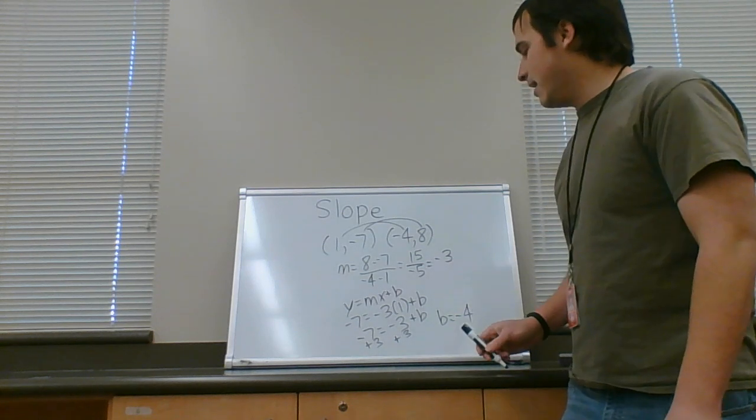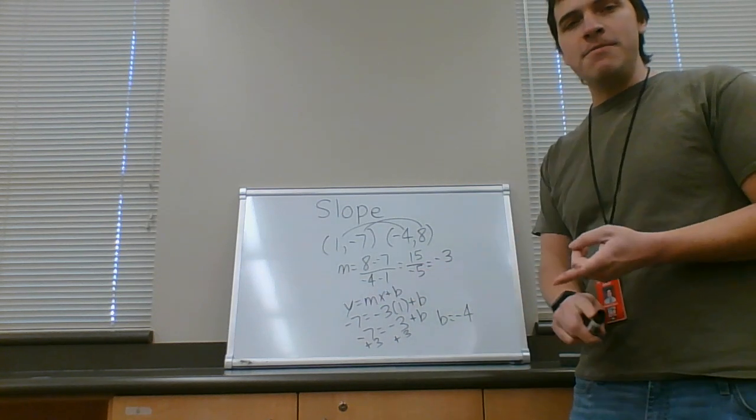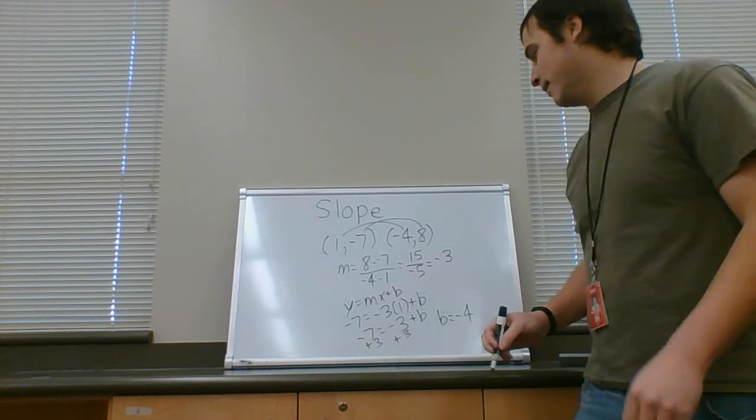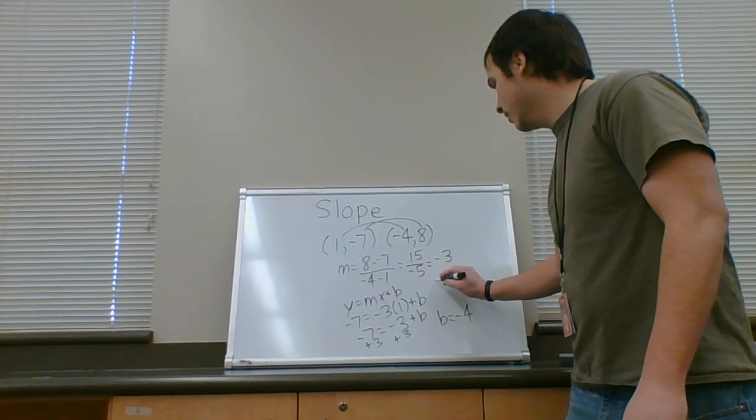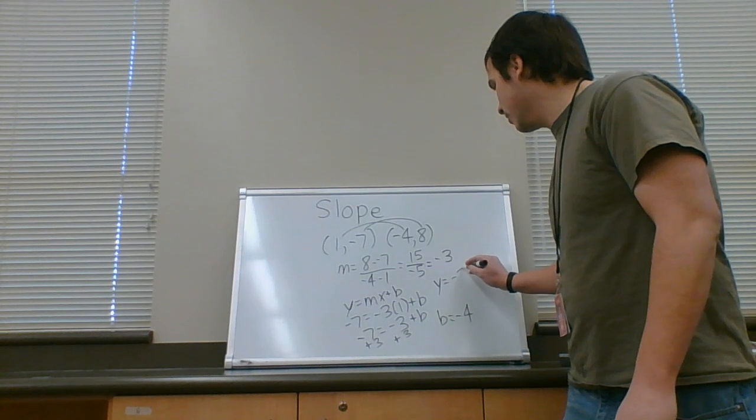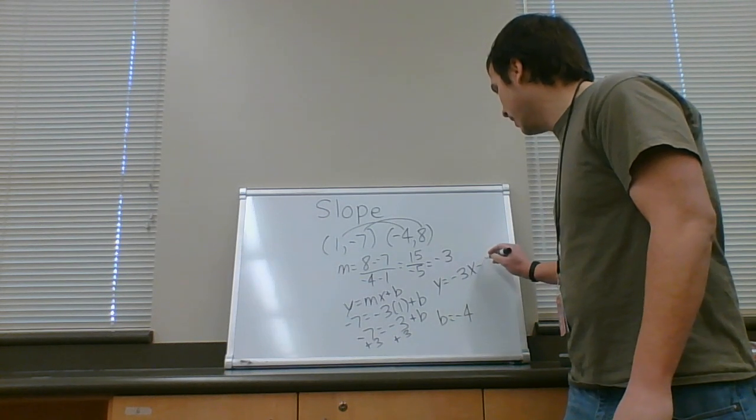Now, once again, y equals mx plus b. We've solved for m. We've solved for b. So, let's put it together and write our equation. y equals negative three x minus four.